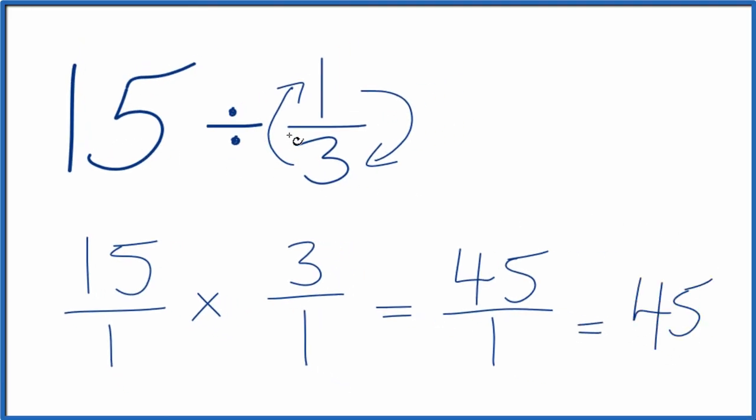So when we divide 15 by 1 third, we get 45. If you were to take 45 and multiply it by 1 third, you'd get 15. So we did this correctly.